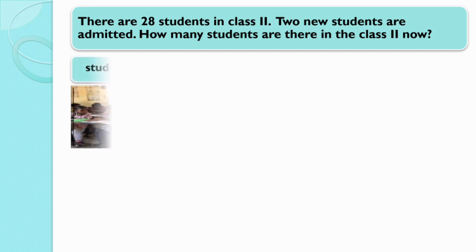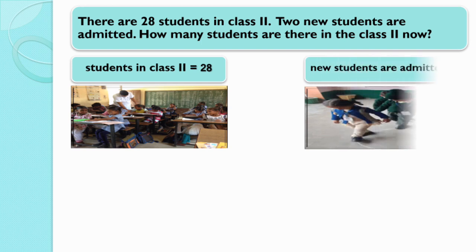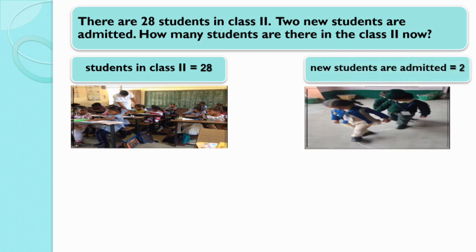Students in class second is equal to 28. New students admitted is equal to 2. When new students are admitted, does the number of students increase or decrease? Of course, the number of students increases — they become more.